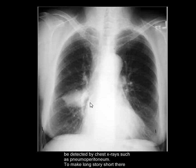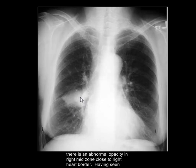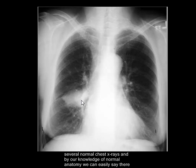To make a long story short, there is a very obvious opacity in the right mid-zone of the lung. We will shortly discuss that the pathology is actually in the pleura rather than in the lung. Looking at the lungs, we see the opacity lies close to the right heart border. Having seen several normal chest X-rays and by our knowledge of normal anatomy, we can certainly say there is no normal structure in this part of the lung that should produce such opacity.